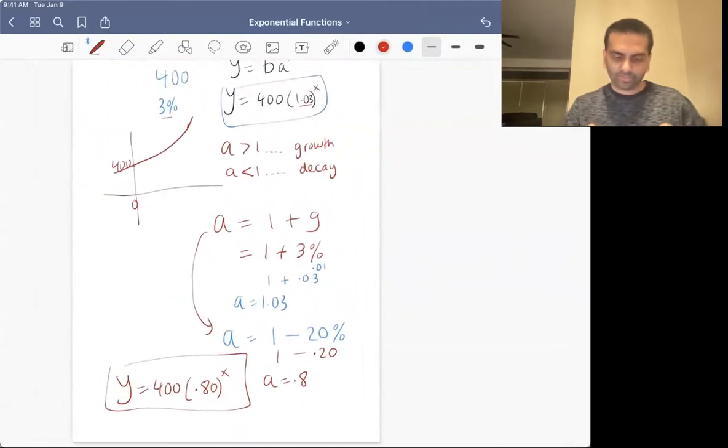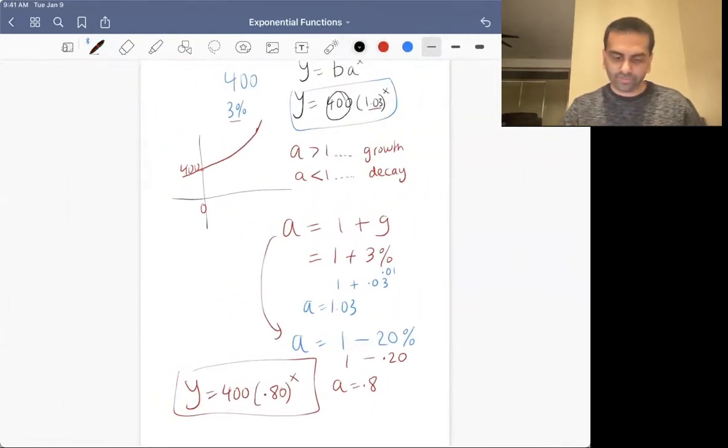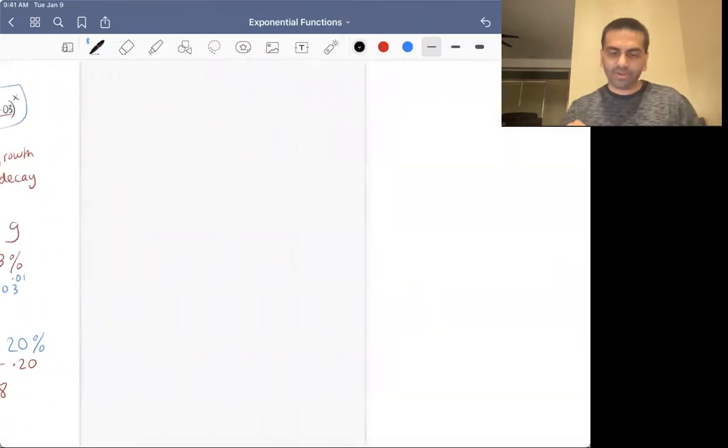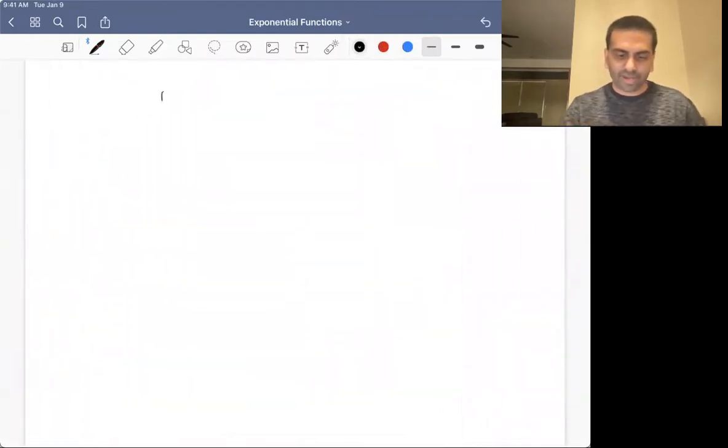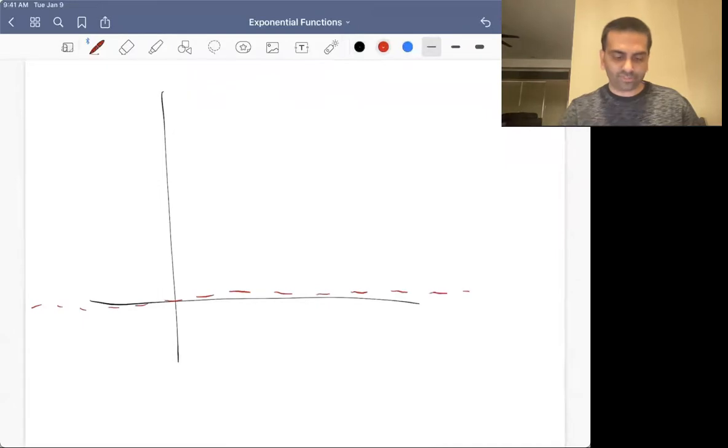So again, comparing these exponential functions, they both have the same initial value, 400, but this one grew, so the A was greater than one. This one's decreasing, so the A is less than one. So let's talk just a little bit more about the graph of this. The graph of any exponential growth function has a horizontal asymptote, if you will, which really just means going from the left, it's just coming from zero and it's going up and up and up.